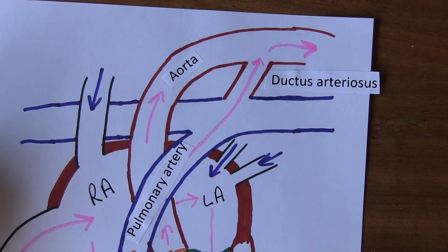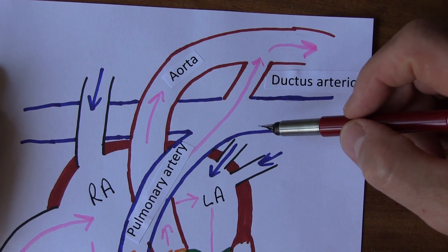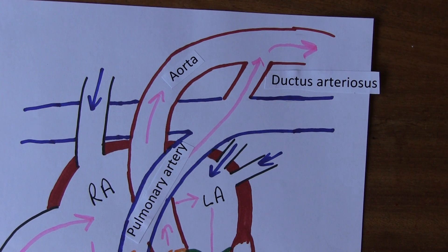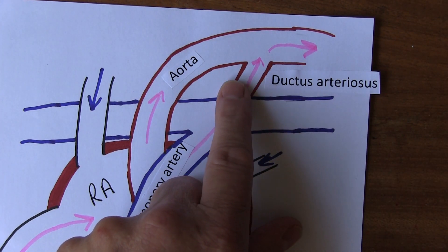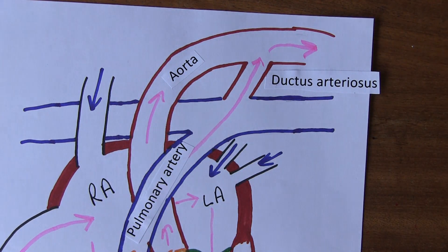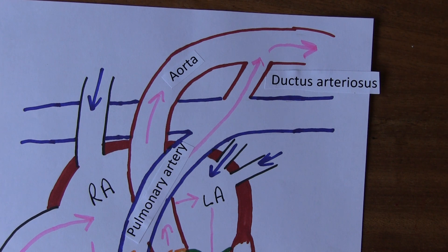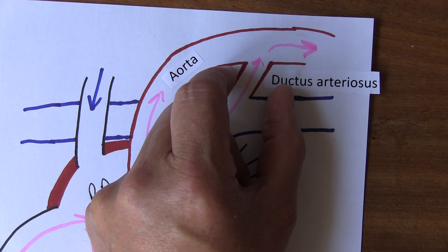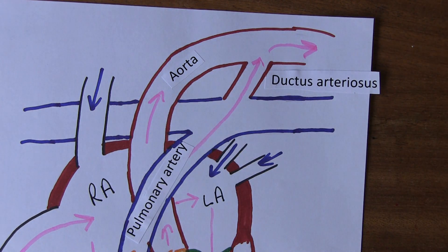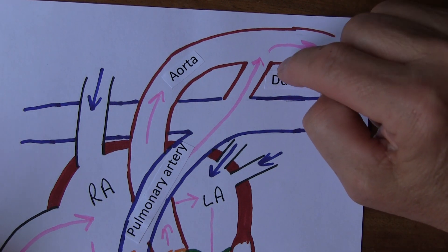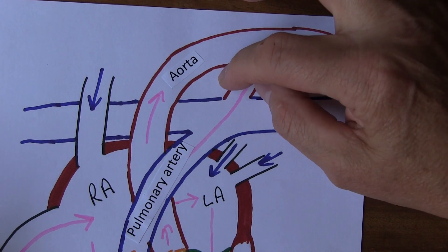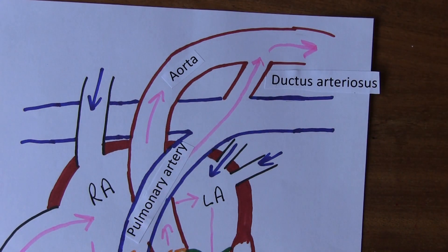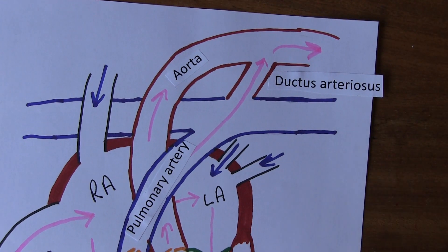The reverse blood flow from the aorta back into the pulmonary artery probably has several further effects. It is believed to stimulate vasoconstricting factors in the endothelium of the ductus arteriosus, helping it to constrict and close off. The reverse blood flow probably also has some effect on catecholamine release, and it is known that adrenergic nerve receptors are present in the ductus arteriosus, which also helps it to constrict. Of course, the increase in oxygen as the neonate starts to breathe is also known to constrict the ductus arteriosus.